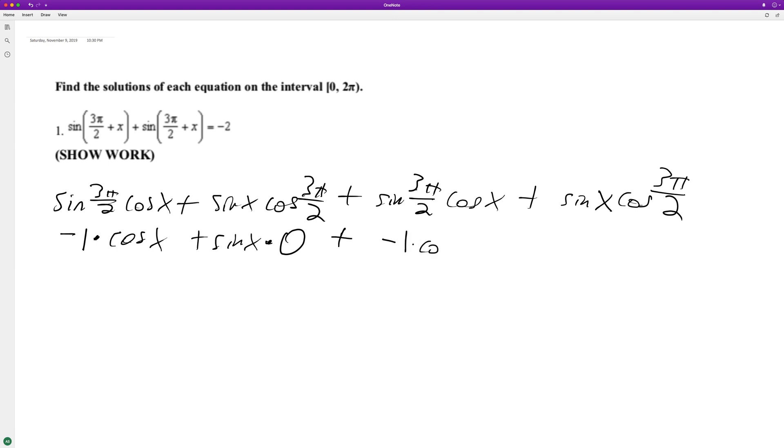Negative 1 times cosine of x plus sine of x times the cosine of 3π/2 is 0. So these are all 0, they cancel out. We get negative cosine x, negative cosine x.